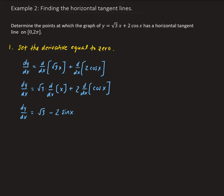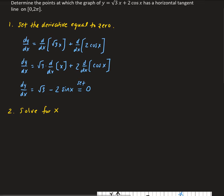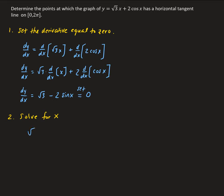Now the next step is to solve for x. We want to find the values of x such that this derivative equals 0, so we set √3 minus 2 sin x equals 0. This is now a trig problem. From here, we get −2 sin x equals −√3. Dividing both sides by −2, we get sin x equals √3 over 2.